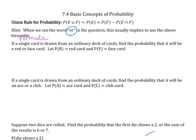If a single card is drawn from an ordinary deck of cards, find the probability that it will be a red or a face card. Let P(R) equal a red card and P(F) be a face card. The probability of a red card is 26 out of 52, since half the deck is red. We add the probability of a face card, which is 12 out of 52, as determined from the last lecture. Then we subtract the probability of cards that are both red and face cards — hearts and diamonds each have three face cards, giving us 6 out of 52.